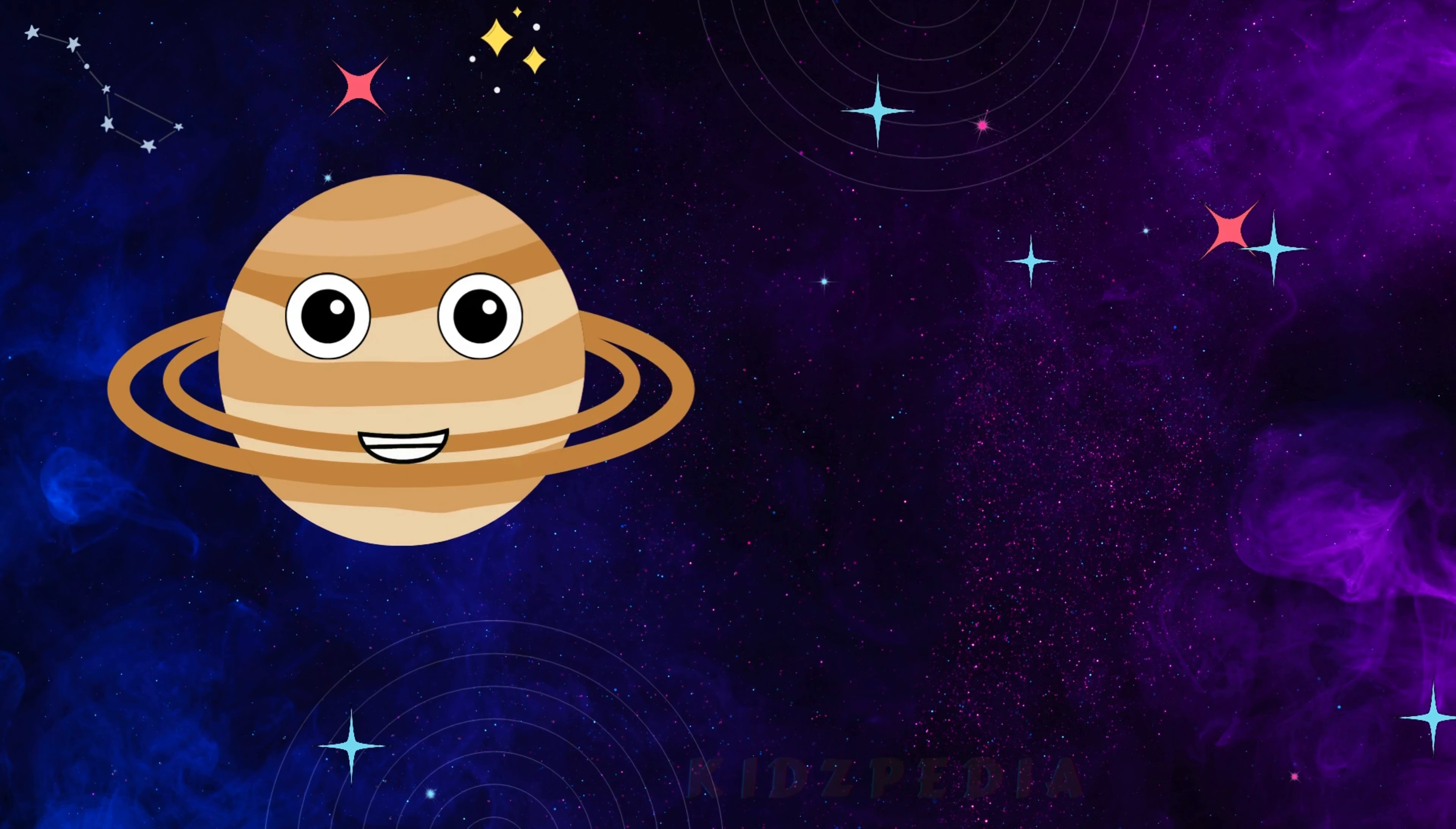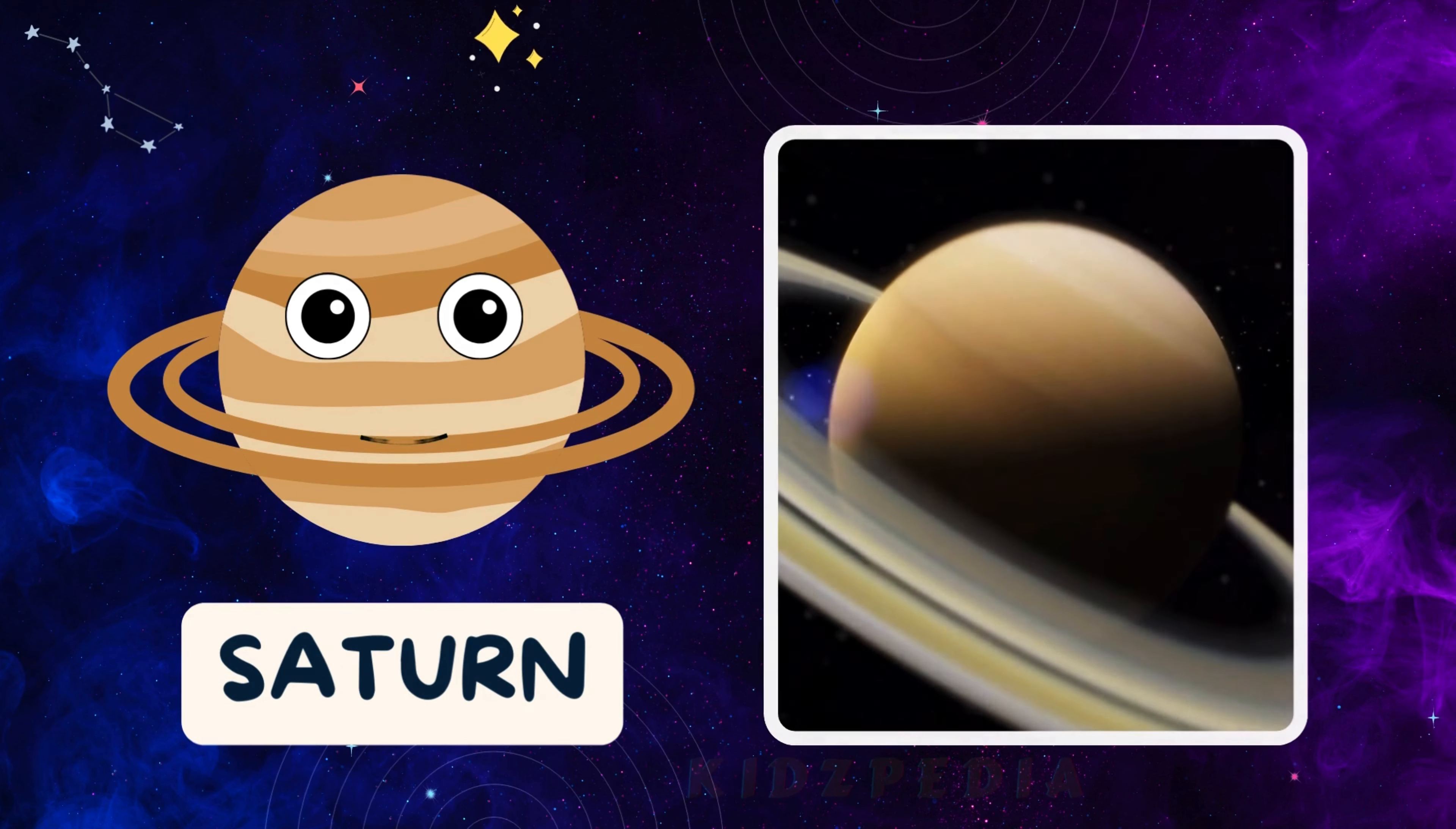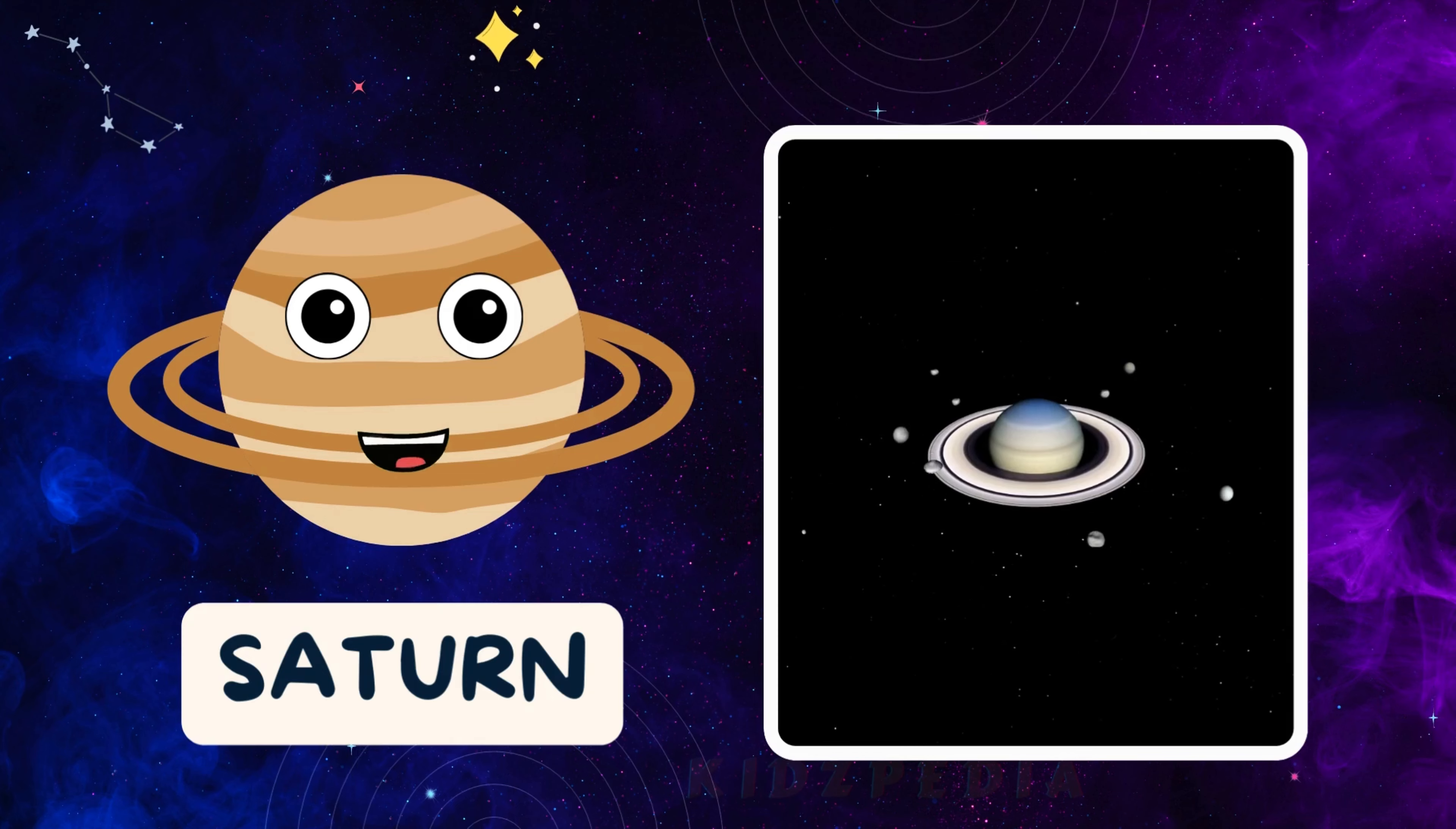Hi, kids. I'm Saturn, the sixth planet from the sun. I'm famous for my beautiful rings made of ice and rock that look like a giant sparkling hula hoop. I'm the second largest planet in the solar system.